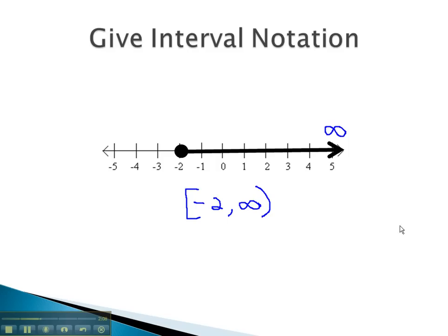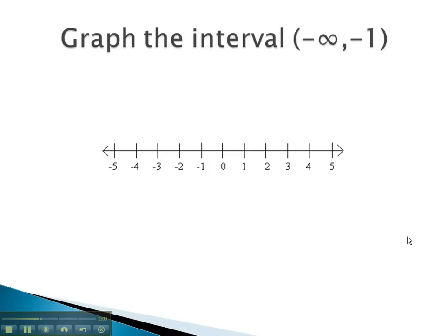Let's consider another example. In this problem, we are given an interval from negative infinity to negative 1. This means the graph is stopping at negative 1. Notice the curved parentheses. This means we're not exactly equal to negative 1.